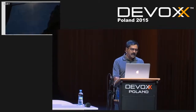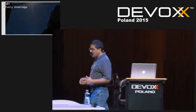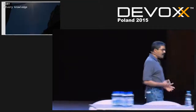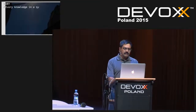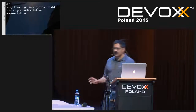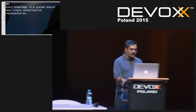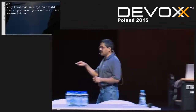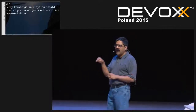The DRY principle is really about knowledge in a system. We are knowledge workers — we implement rules, logic, information, and knowledge in code. The principle says every piece of knowledge in a system should have a single, unambiguous, authoritative representation. The idea is we should be able to put our finger and say, 'That's where that core logic is being handled — in one single place.' We see the DRY principle being violated so many times in so many cases.